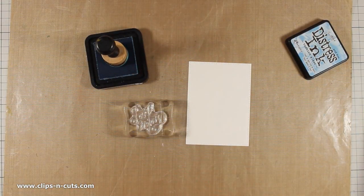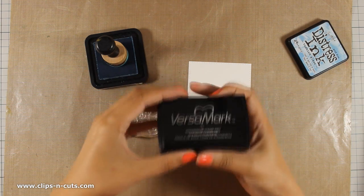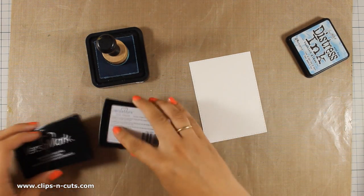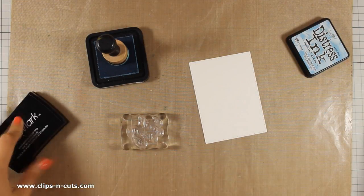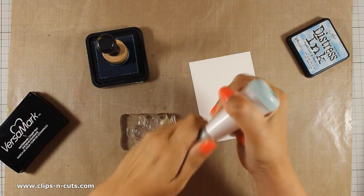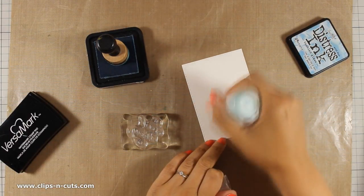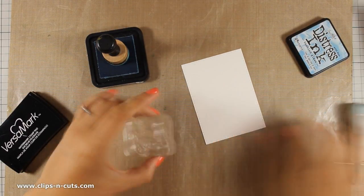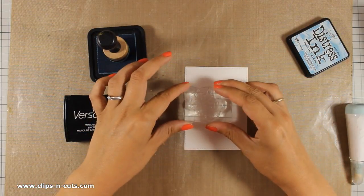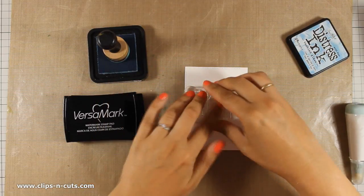From the white cardstock that was in the kit I have cut out a rectangle and now I am going to stamp my sentiment. The sentiment is also from the stamp set that was in the kit. I am using VersaMark because I am going to white emboss the sentiment. The embossing tool makes sure that my embossing powder is going to stick only where it is supposed to. It actually removes any static electricity from my paper.